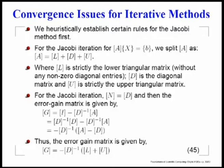For Jacobi iteration for the equation Ax = B, we split A into 3 parts. This is a more general problem. The A matrix is split into a strictly lower triangular matrix L, a diagonal matrix D, and a strictly upper triangular matrix U. When writing L and U, there are no non-zero entries on the diagonal — those non-zero entries are strictly placed in the D matrix itself.